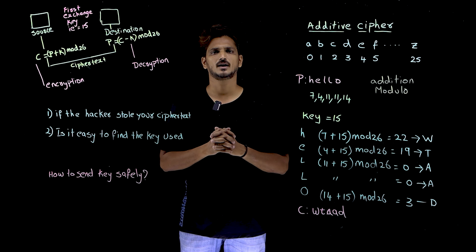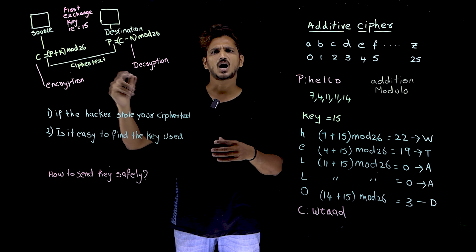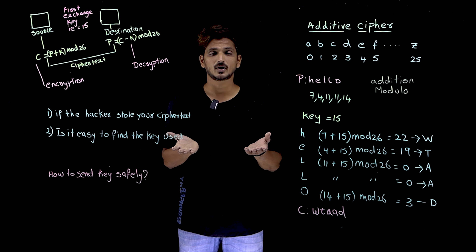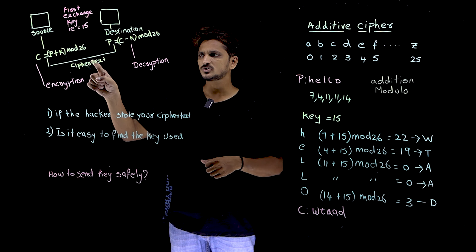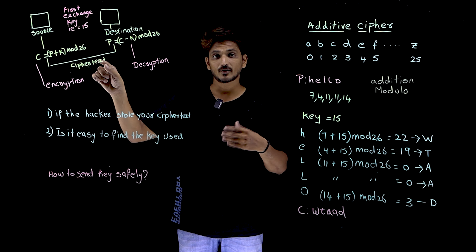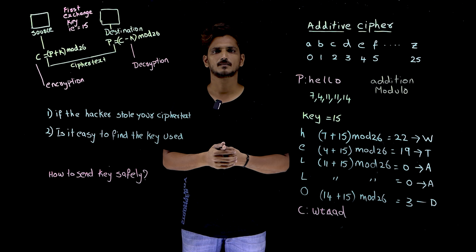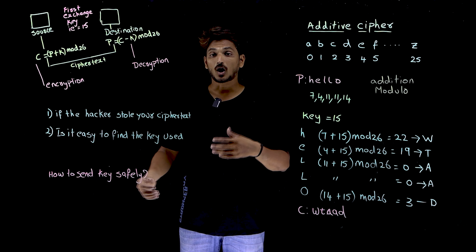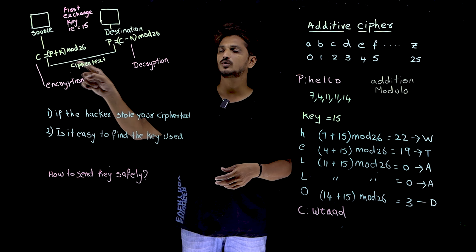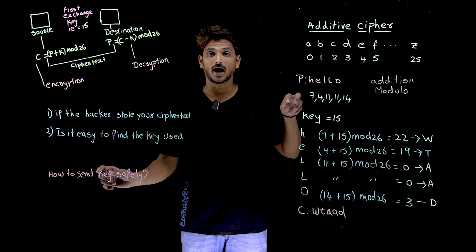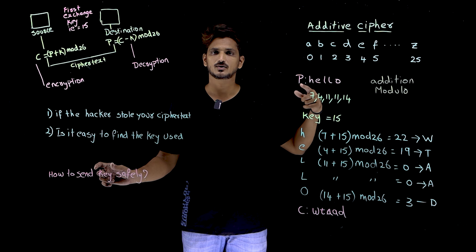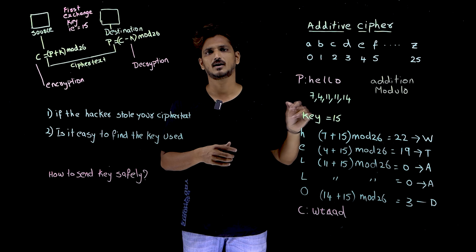This is a very simple technique. One key point: whenever we say the two parties first exchange the key, how do they exchange it? They have to send the key over the internet. But the internet is open to all — hackers stay there and check your information. If a hacker identifies the key, they can get the actual information. So how do we send the key safely without the hackers knowing? This will be discussed at the end of the cryptography playlist; there are separate key security algorithms.